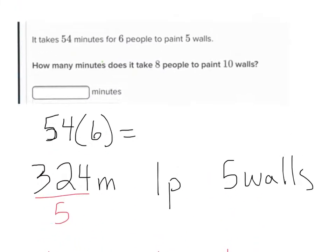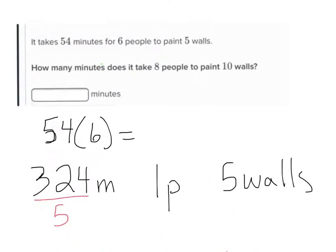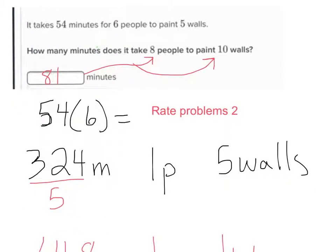So the answer is 81 minutes for 8 people to paint 10 walls. Go on Khan Academy and search 'Rate Problems 2' — it's going to make you do 3 in a row.